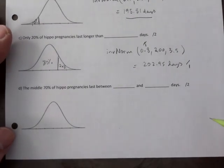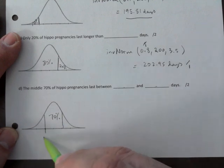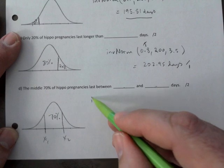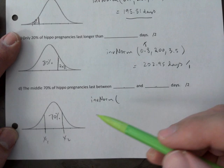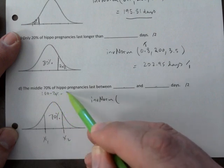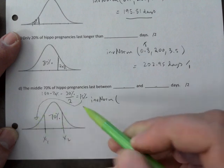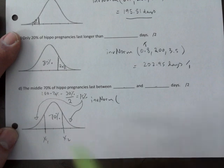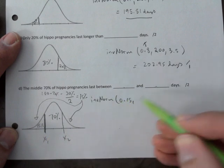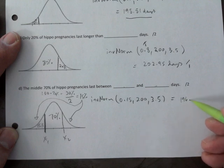Next, the middle 70% of hippo pregnancies last between this many days, so they're giving you basically the middle 70%. So we're going to figure out this one and this one, like the two days, number of days that would have 70% in between. So we go inverse norm of, and this is where we covered yesterday, it's 100. You go 100 minus the 70 in the middle, that gives you 30%, and you split that in half, which gives you 15. So the one that goes there, 15 goes there, and 15 goes there, and that's important because inverse norm always wants the percentage to the left of the value you're trying to find. So this would be 0.15, 203.5, so that would give you 196.37 days.